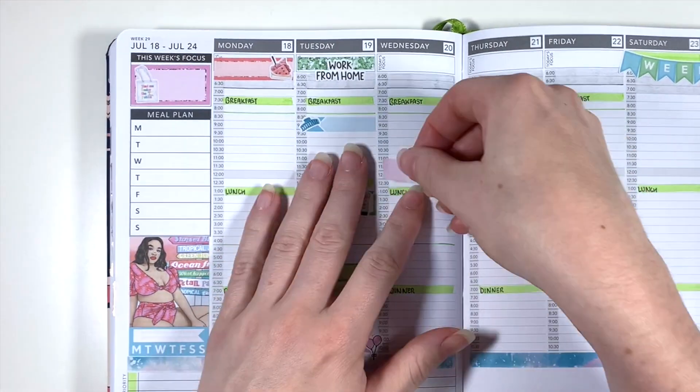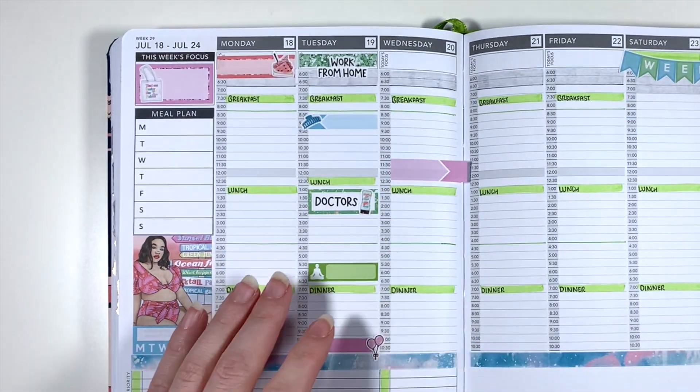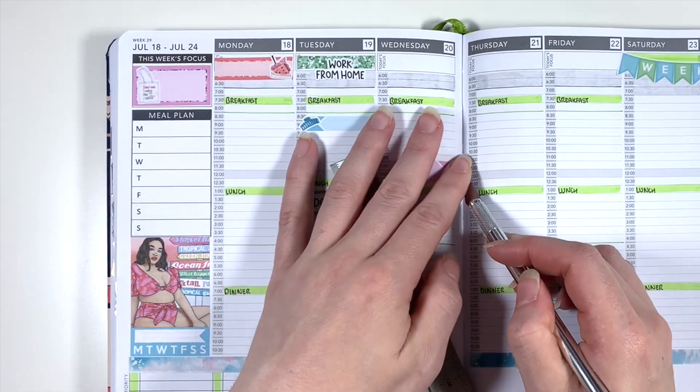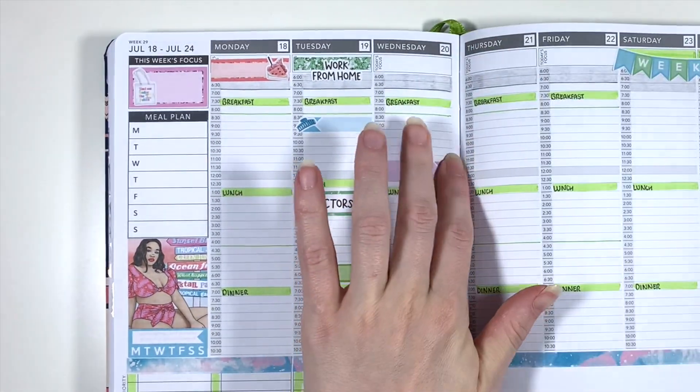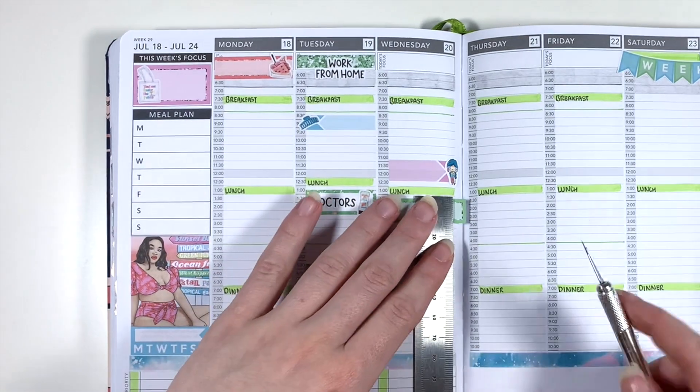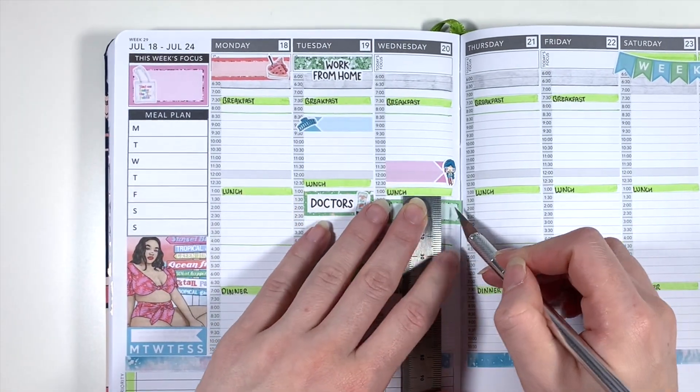And now we can move on to Wednesday where I was duty scientist so I'm using a regular event label and a skinny event label from the kit with a joy of planning scientist girl to mark that in. I also have my regular Wednesday afternoon seminar so I'm using a quarter box from the kit with the laptop doodle to mark that in before I add in my second duty scientist session.